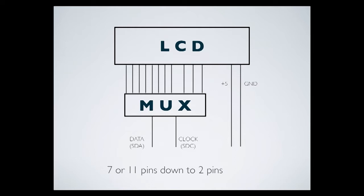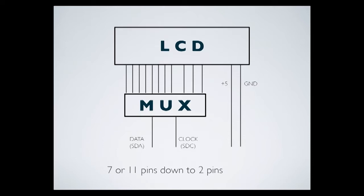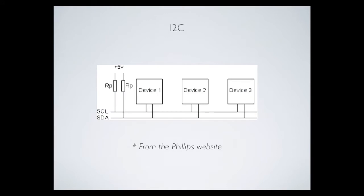Where it gets confusing is how you communicate with the LCD — there aren't many working libraries out there. The MUX uses a protocol called I2C, a two-wire protocol developed by Philips. You just have a clock wire (SCL) and a data wire (SDA). You can look up I2C and find lots of information. As part of the protocol, you have one master and a bunch of slaves. The master can request information or control any device that has an address on the line.